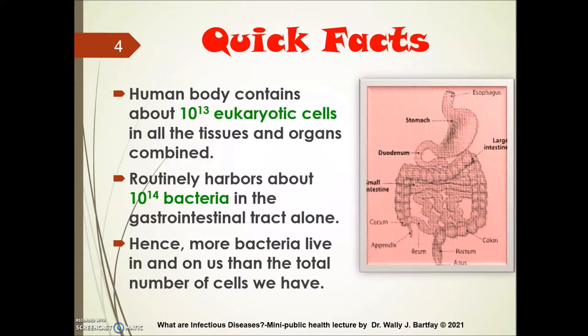Here are some quick facts. The human body contains 10 to the 13th power eukaryotic cells in all tissues and organs combined. However, the body routinely harbors about 10 to the 14th power bacteria in the gastrointestinal tract alone. Hence, more bacteria live in and on us than the total number of cells in our entire body.